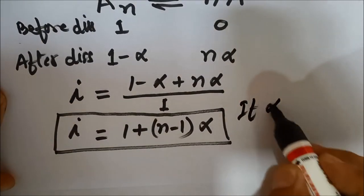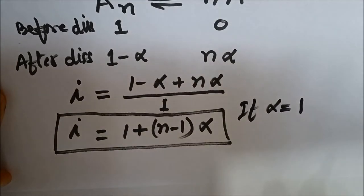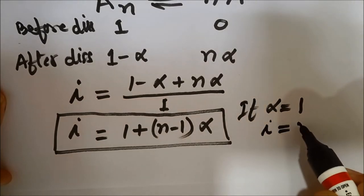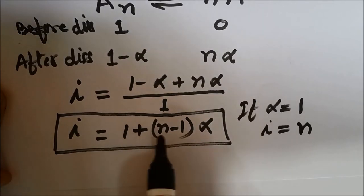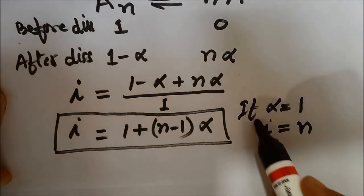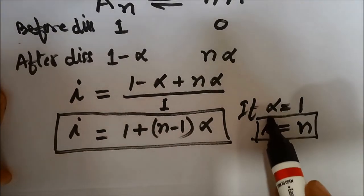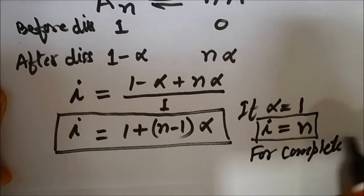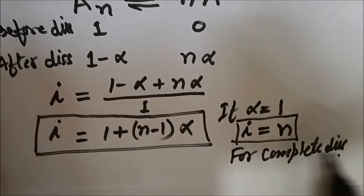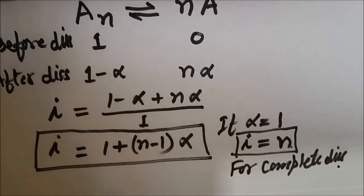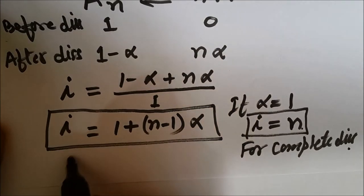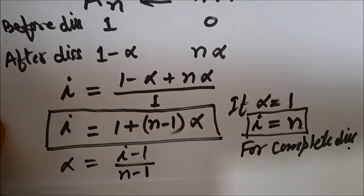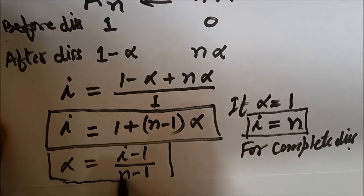When α = 1, meaning complete dissociation, i = 1 + (N − 1)(1) = N. So for complete dissociation, i equals N. Rearranging the expression, alpha α = (i − 1) / (N − 1). These are the key expressions for dissociation.